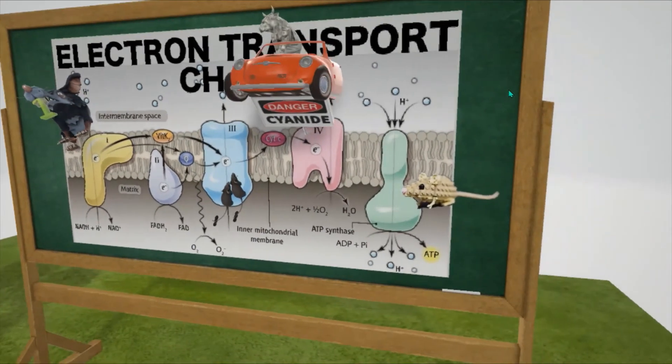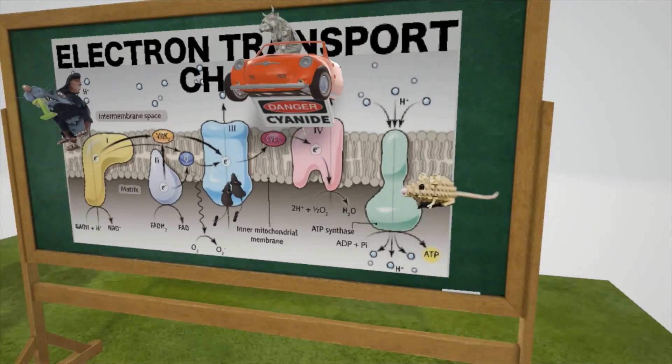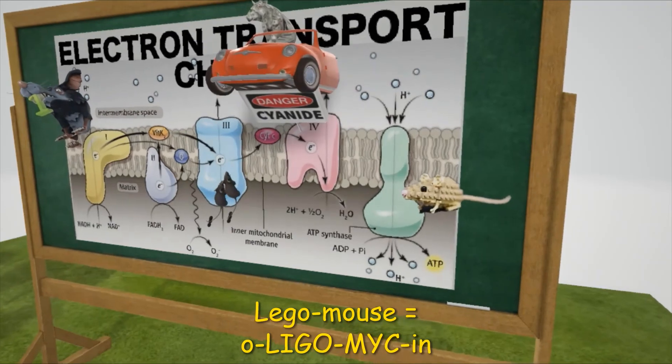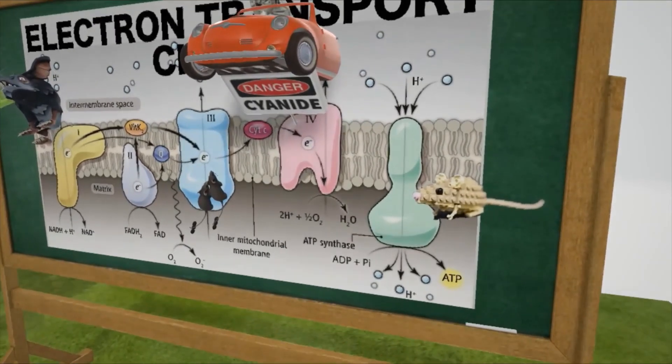And finally we get up to complex 5, the ATP synthase. ATP synthase inhibitors directly inhibit the mitochondrial ATP synthase causing an increase in the proton gradient. So no ATP is reduced because the electron transport chain stops. And the one that we need to be aware of is oligomycin, represented by this Lego mouse. The Lego mouse for oligomycin. He's a mouse made of Lego.